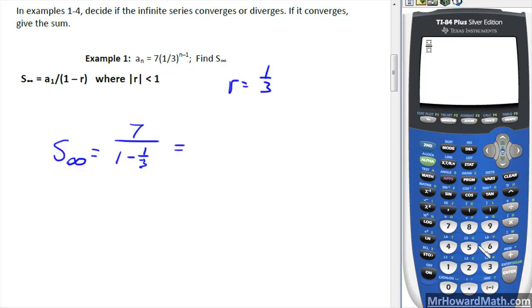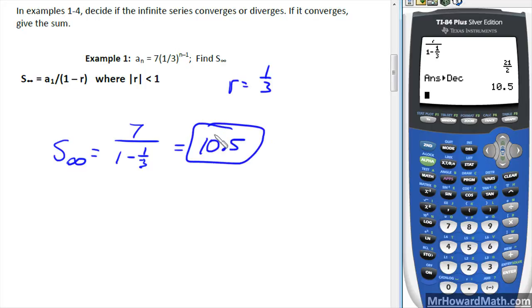Put that in our calculator. Alpha Y equals, enter to get the fraction button, 7 over the quantity 1 minus, and I'll use the fraction button again, and that would be 21 over 2. If we want a decimal, 10.5. So 10.5 is the answer to example 1.